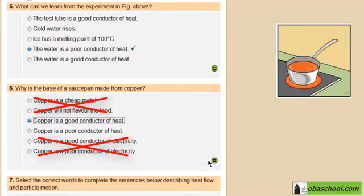So, copper is a good conductor of heat is the cause for why the base of a saucepan is made from copper. That's all. Thanks for watching.